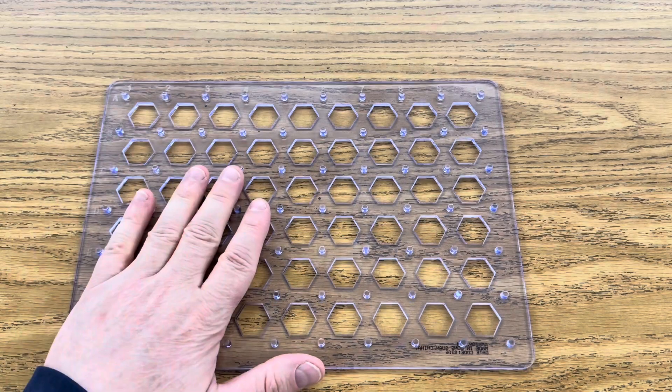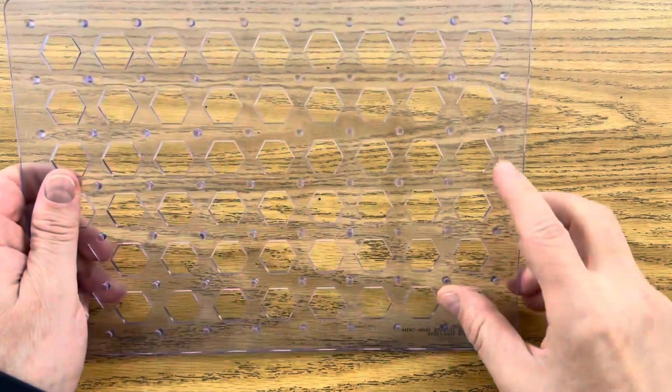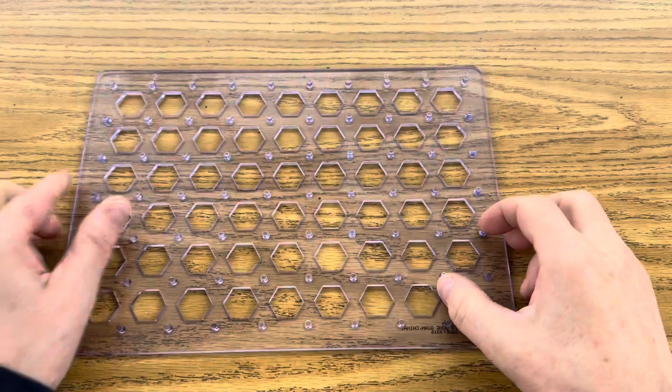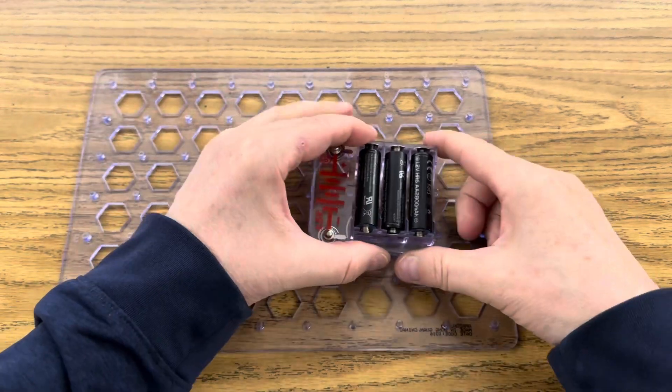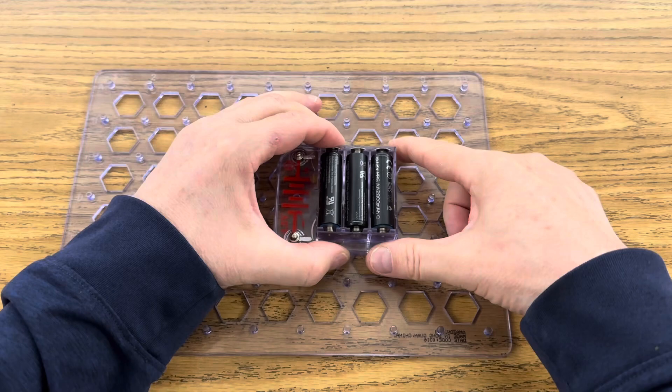Begin by putting your circuit board on a flat surface with the pegs facing upward. Start by taking your battery jacket and attach it to your circuit board.